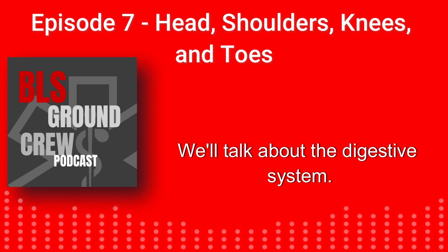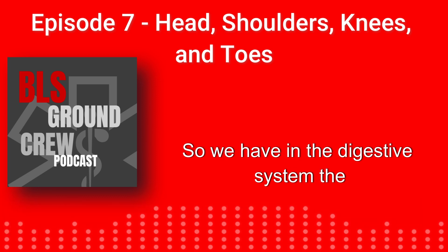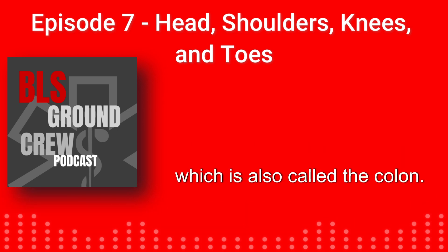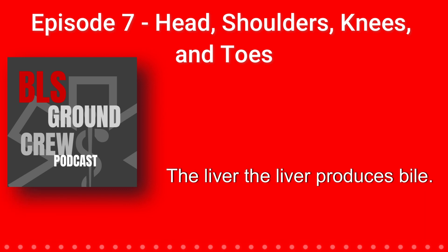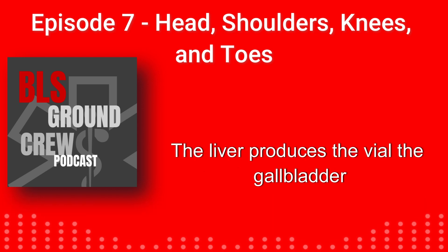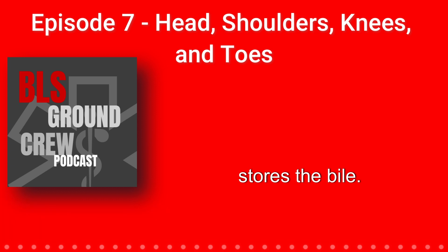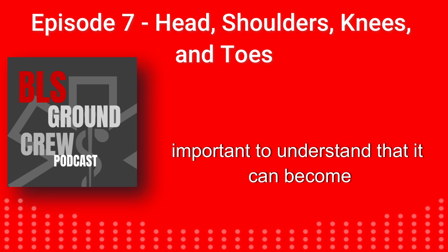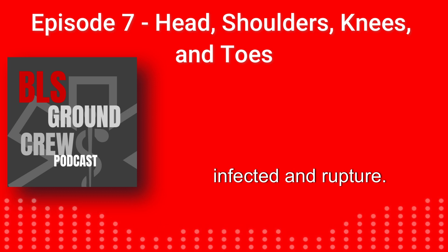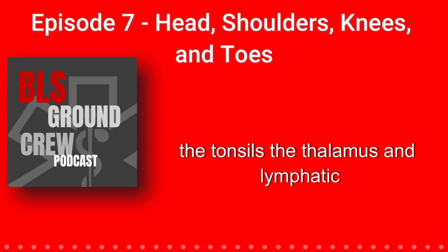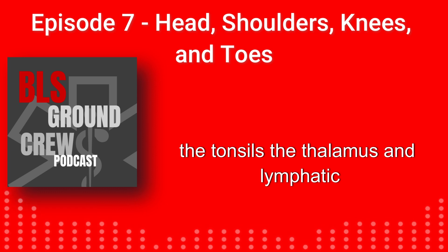The digestive system includes the stomach, the small intestine, the large intestine (also called the colon), and the liver. The liver produces bile — important to remember that the liver produces it, while the gallbladder stores it. The spleen filters blood. The appendix doesn't have a major EMS use, but it can become infected and rupture. The lymphatic system consists of the spleen, the tonsils, the thalamus, and lymphatic vessels.